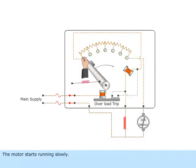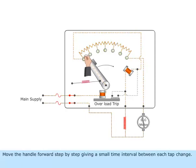The motor starts running slowly. Move the handle forward step by step giving a small time interval between each tap change.